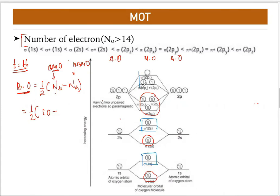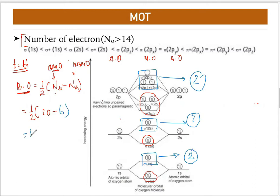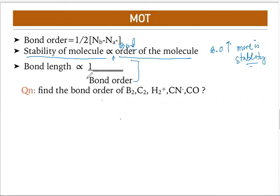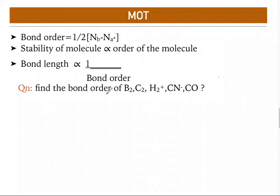Counting electrons in BMO: 1, 2, 3 ... 10 electrons. Electrons in ABMO: 2 + 2 + 2 = 6. Bond order = ½ × (10 − 6) = ½ × 4 = 2. So the bond order is 2. Note: stability is directly proportional to bond order, and bond length is inversely proportional to bond order.